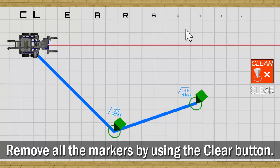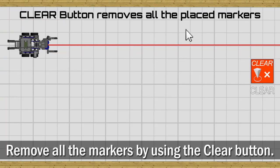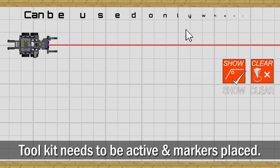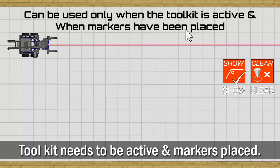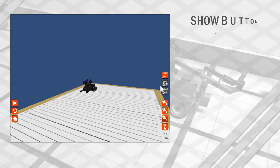The Clear button is used to remove all of the markers you placed around the world. This button can only be used when the toolkit is active and markers have been placed.